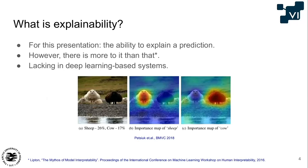What is explainability? In this presentation, I'm going to work with the definition that explainability is being able to explain the prediction — and since this is visual intelligence, what pixels in the input influence a prediction. In general, explainability is a bit more complicated. The paper by Zachary Lipton, 'The Mythos of Model Interpretability,' argues that explainability is actually a bunch of concepts, so you should really define what you're talking about.